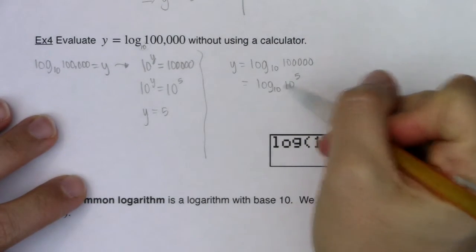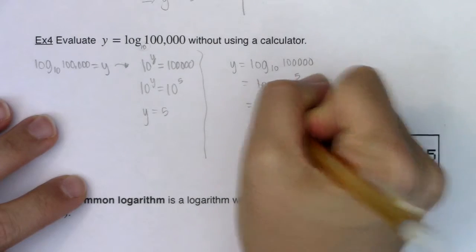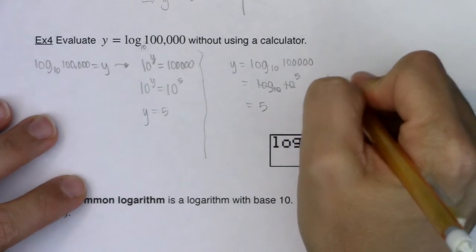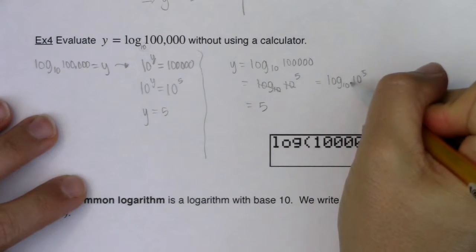And whenever the base of your logarithm and the base of your power are the same, the only thing that survives is the exponent. And again, just to remind you, let me rewrite this before I cancel it out, because this entire expression is an exponent. Well, what exponent do you need on 10 to get it to be 10 to the fifth?